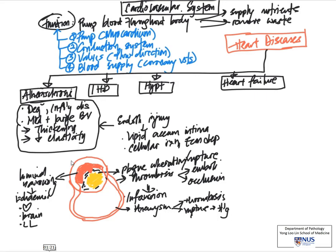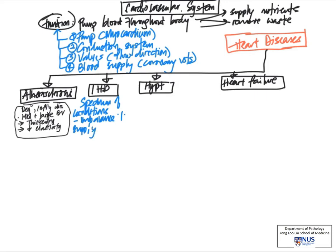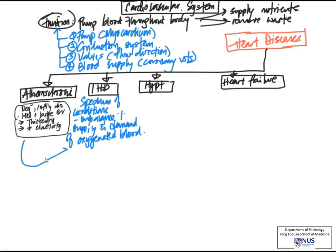Now let's move on and talk about ischemic heart disease. Again, we begin with the definition: this is a spectrum of conditions characterized by an imbalance between the supply and demand for oxygenated blood to the myocardium — also defined as a spectrum of disorders due to the imbalance between myocardial metabolic demands and coronary blood flow. The majority of cases of ischemic heart disease are due to coronary artery disease, in other words atherosclerosis of the coronary arteries, and this is the cause in more than 90% of cases.